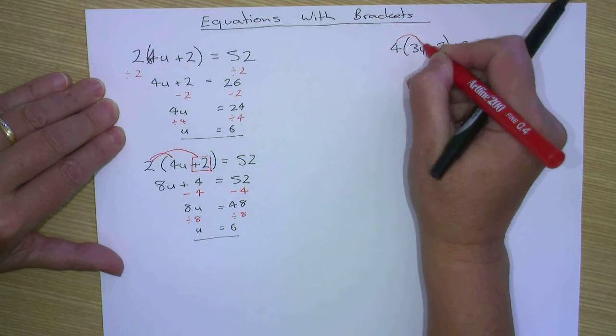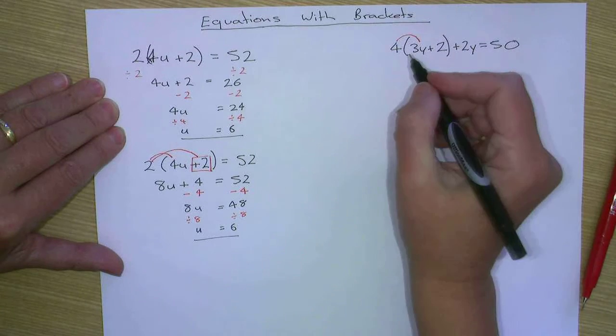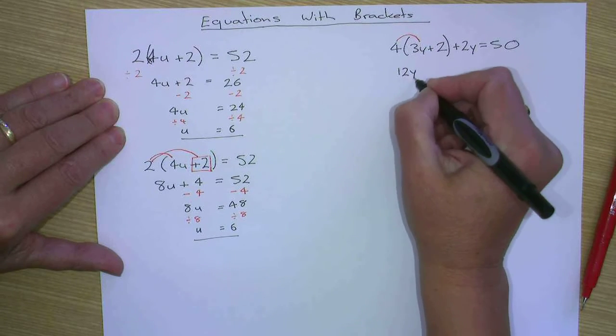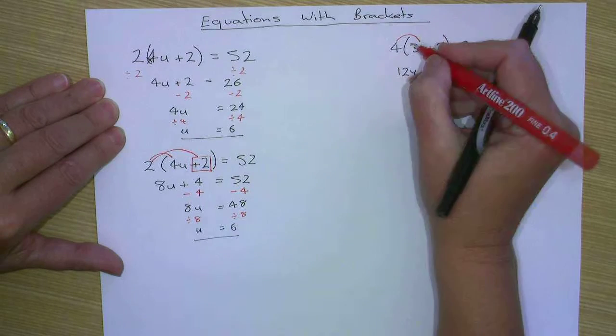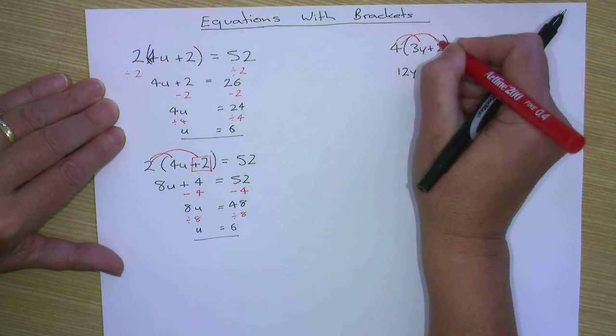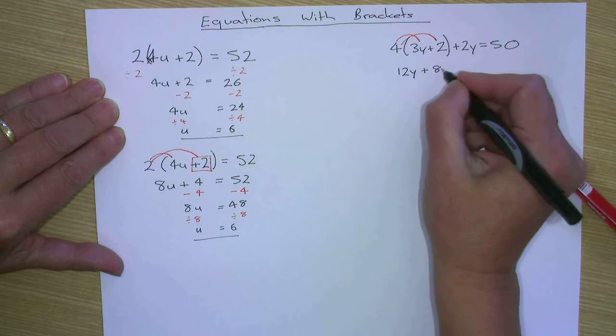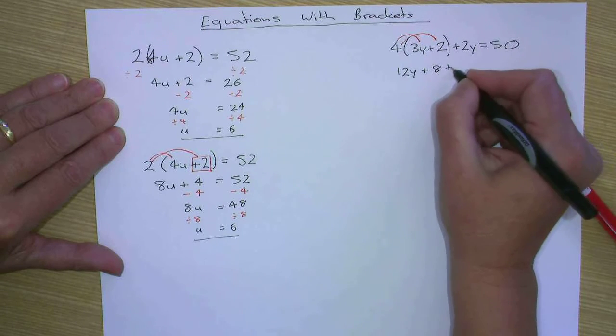So four times three y. Four times three is twelve. So that's twelve y. Then we do four times plus two, which is plus eight. And then we've still got this two y here.